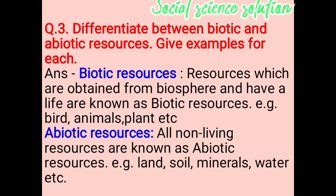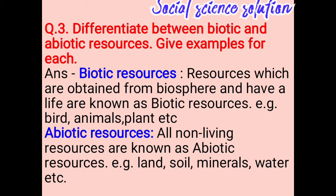Differentiate between biotic and abiotic resources with examples. Biotic resources: resources which are obtained from the biosphere and have life are known as biotic resources. Examples: birds, animals, plants, etc. Abiotic resources: all non-living resources are known as abiotic resources. Examples: land, soil, minerals, water, etc.